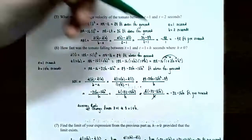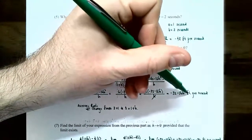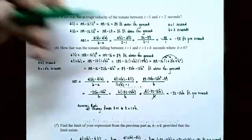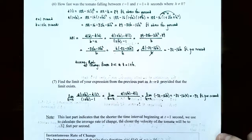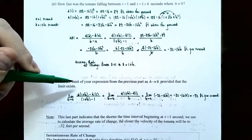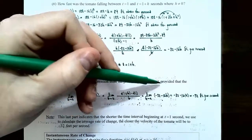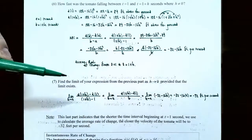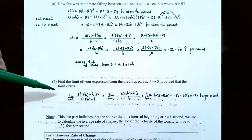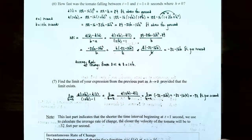So the average velocity between one second and one plus h seconds is negative 32 minus 16h feet per second. Part seven: find the limit of this expression as h approaches zero. We're going to let this unknown constant approach zero — get really small — provided the limit exists. We're finding the limit as h approaches zero of the slope of the secant line: the limit of the distance at one plus h minus the distance at one divided by h.